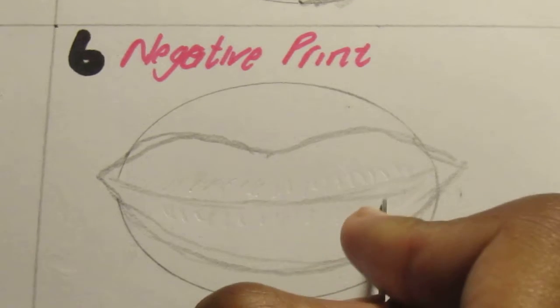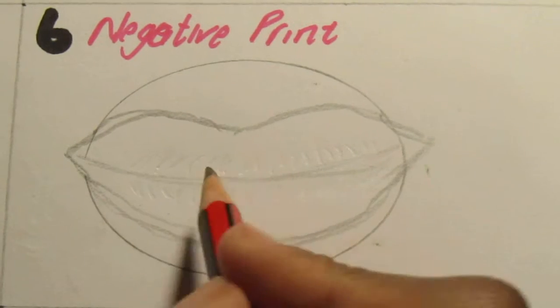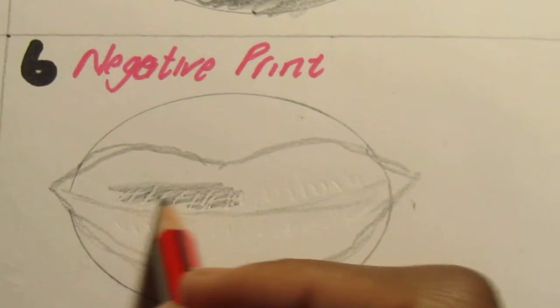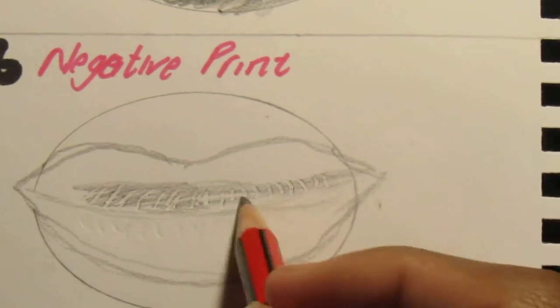You know, practice makes perfect. It all takes time. So basically, then you just shade over it like that, and then you see the negative print coming out. Isn't